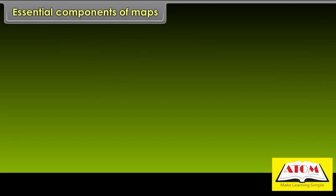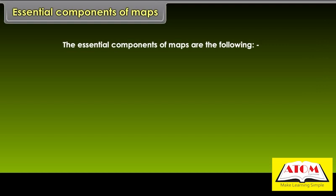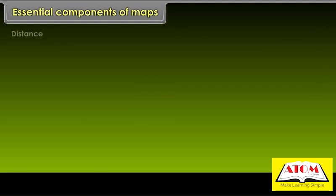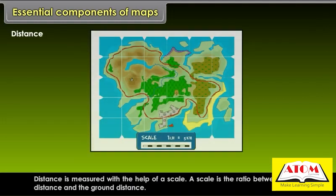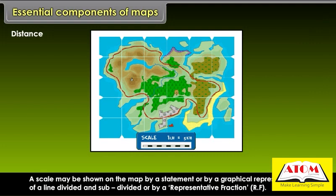The essential components of maps are Distance, Direction, and Symbol. Distance is measured with the help of a scale. A scale is the ratio between map distance and the ground distance. A scale may be shown on the map by a statement, by a graphical representation of a line divided and subdivided, or by a representative fraction (RF).